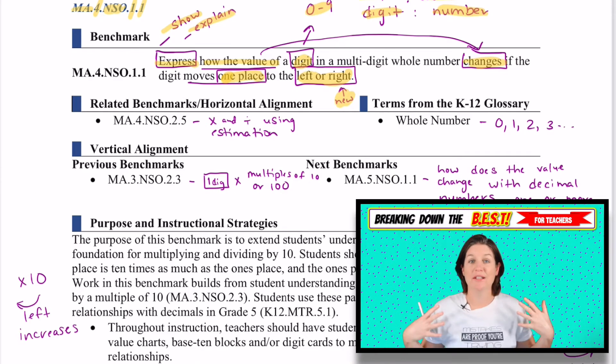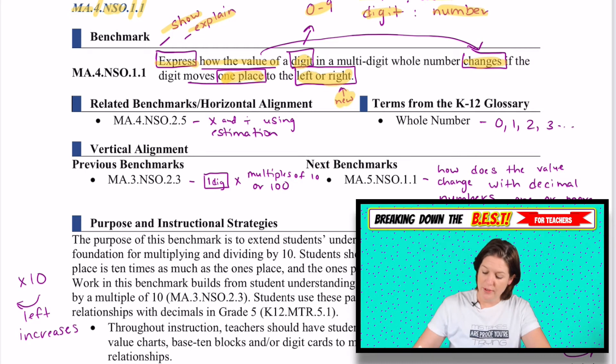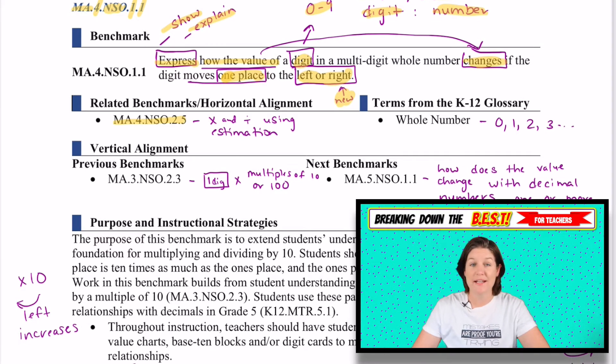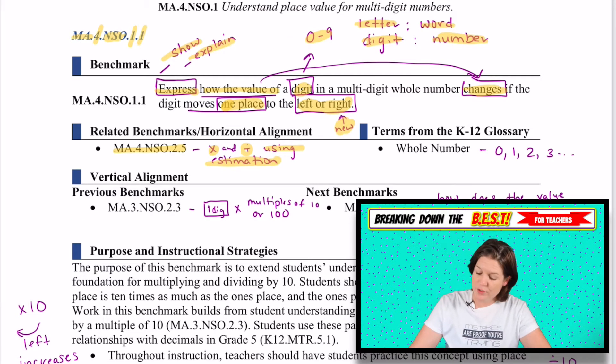These are living documents. The Department of Education in Florida, they're constantly updating these. I do want to give them some props because I think that they really do a fabulous job of giving us as much information as they can here. So what are some other standards that are related in fourth grade? We have MA.4.NSO.2.5. And that benchmark, that standard, is where we are multiplying and dividing using estimation. Some terms that you need to know. Well, they just said one term. I believe that there are more terms, but here, just whole numbers: one, two, three.